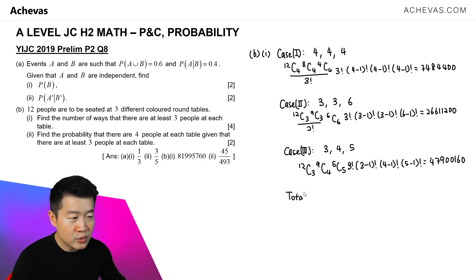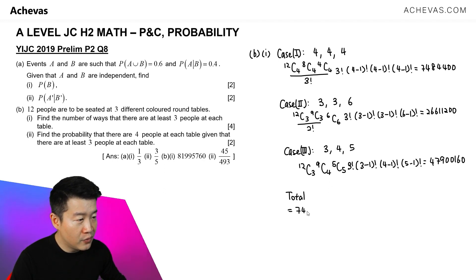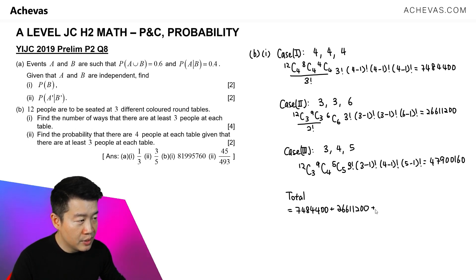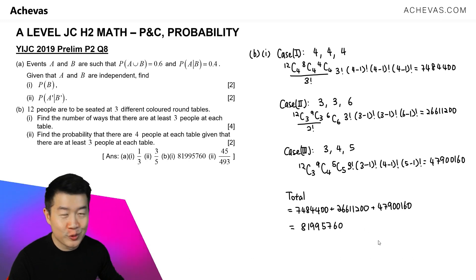We can now find the total number of ways by adding all three cases together: 7,484,400 plus 26,611,200 plus 47,900,160, which gives a final answer of 81,995,760.